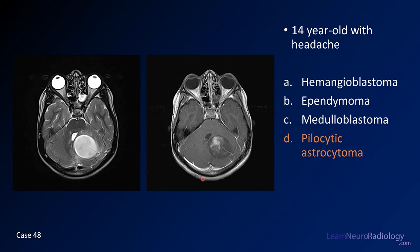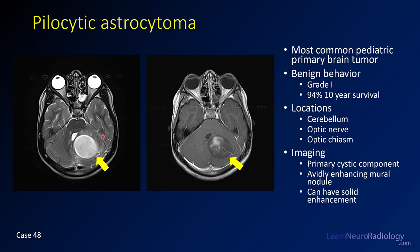This is a case of pilocytic astrocytoma. What you have is a teenager with a well-circumscribed mass in the left posterior fossa, some edema around it, some mass effect, and a little heterogeneous enhancement. If you see a posterior fossa mass in a child, the most common pediatric brain tumor is a pilocytic astrocytoma. These are relatively benign tumors with relatively good survival.